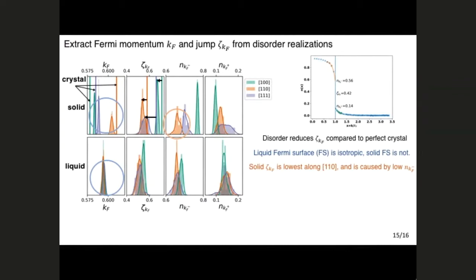And second of all, the liquid Fermi surface is completely isotropic, whereas the solid Fermi surface is clearly not. And here we can also see that the reason the solid jump is so small along the 1,1,0 direction is because the momentum distribution is really low within the Fermi surface. And I think this is because the reciprocal lattice vectors are along the 1,1,0 direction. So this is because you get those secondary peaks along 1,1,0, so you have to shift more weight out of your main Fermi surface. So we can understand all of them.